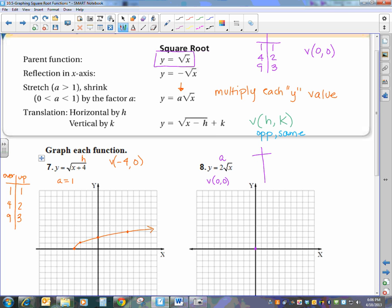Then I've got my key points: 1, 4, 9, and 1, 2, 3. We have an a value that's not 1, so now we have to look and remember that that changes my y's. So let's go change my y values. 1, 4, 9, and 1, 2, 3. Because a is equal to 2, I have to multiply each of my y values by 2. So 1 times 2, 2 times 2, and 3 times 2.